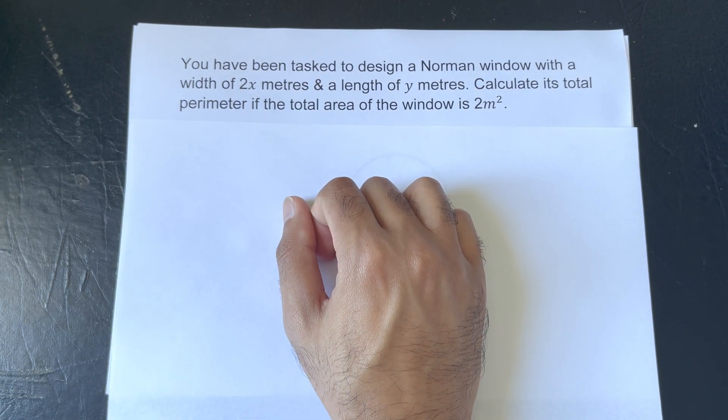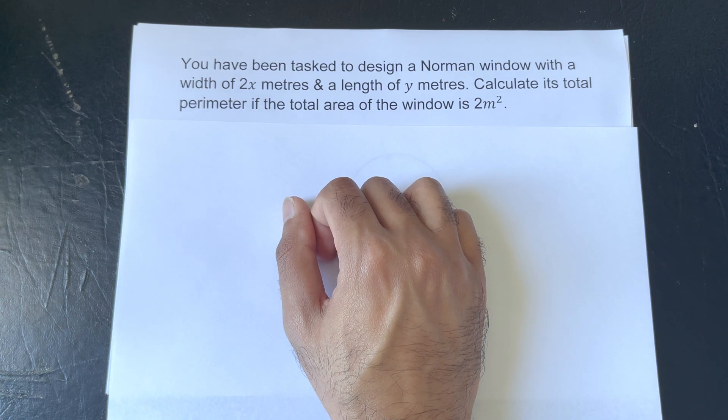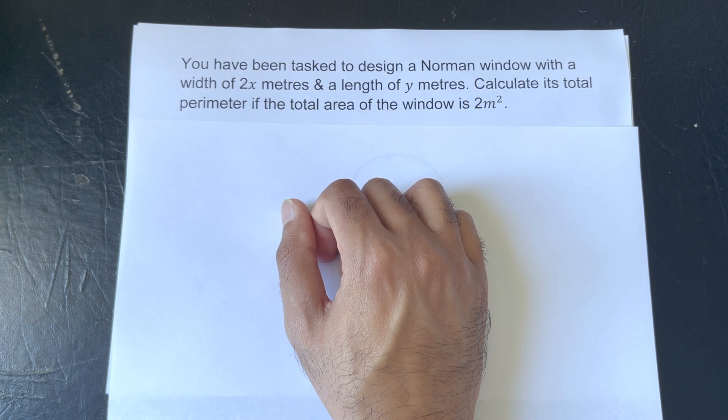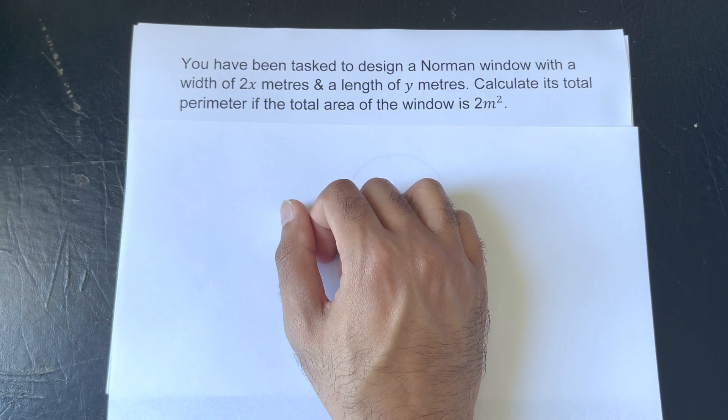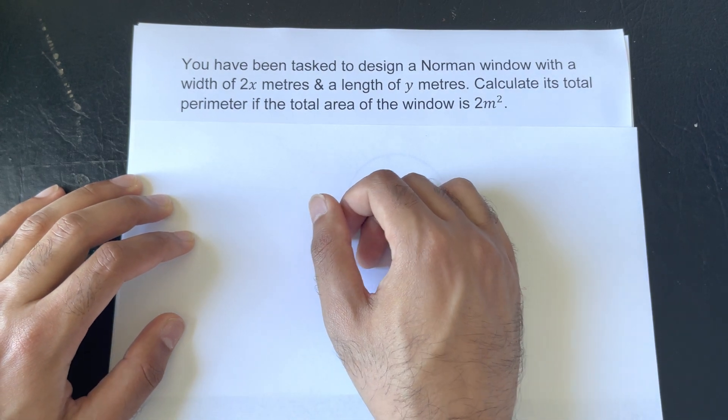Okay, we have a question. You have been tasked to design a Norman window with a width of 2x meters and a length of y meters. Calculate its perimeter if the total area of the window is 2 meters squared.